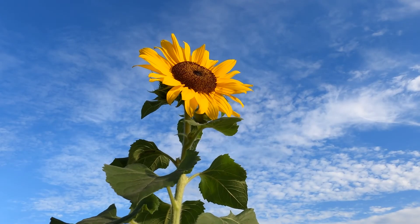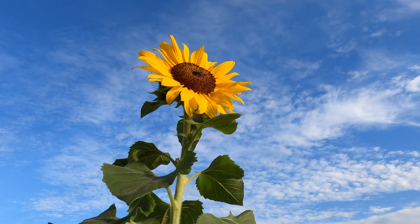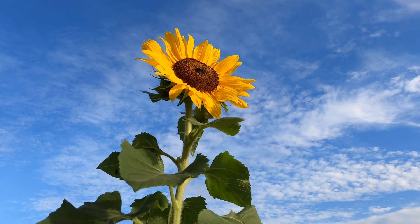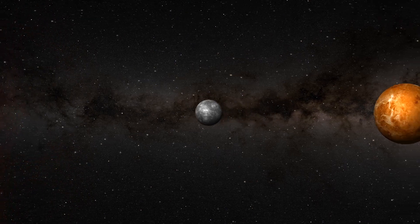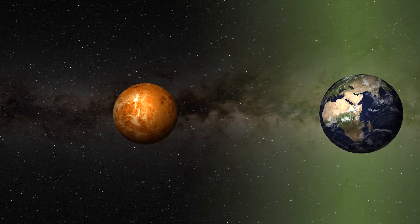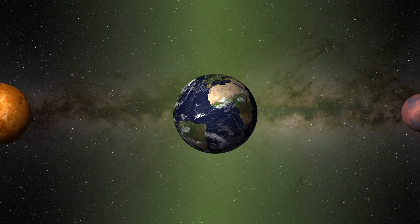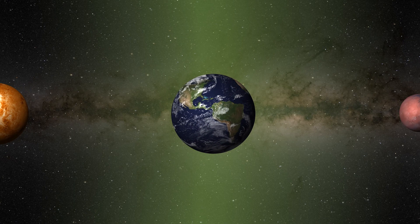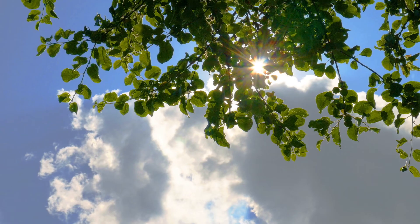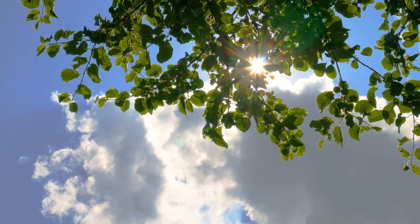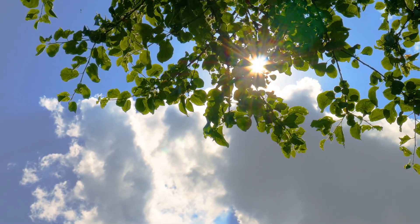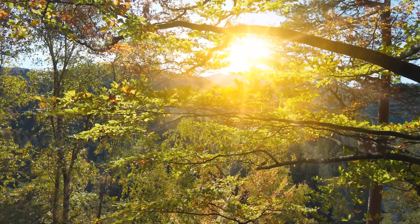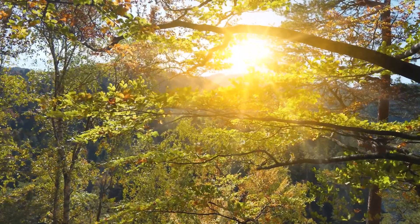For photosynthesis to occur efficiently, a specific range of light intensity is necessary. The habitable zone is precisely where this balance is struck perfectly. The Earth receives an adequate amount of sunlight that is neither too intense to damage plants and other photosynthesizing organisms, nor too weak that photosynthesis cannot occur efficiently.